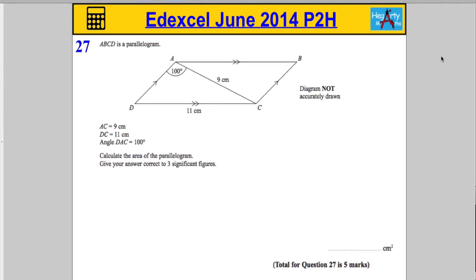Okay, here we go. Final question of this paper. We're told that ABCD is a parallelogram and we've got some various different measurements. So we've got the lengths of various sides and different angles. We're asked to calculate the area of the parallelogram and give our answer to three significant figures.